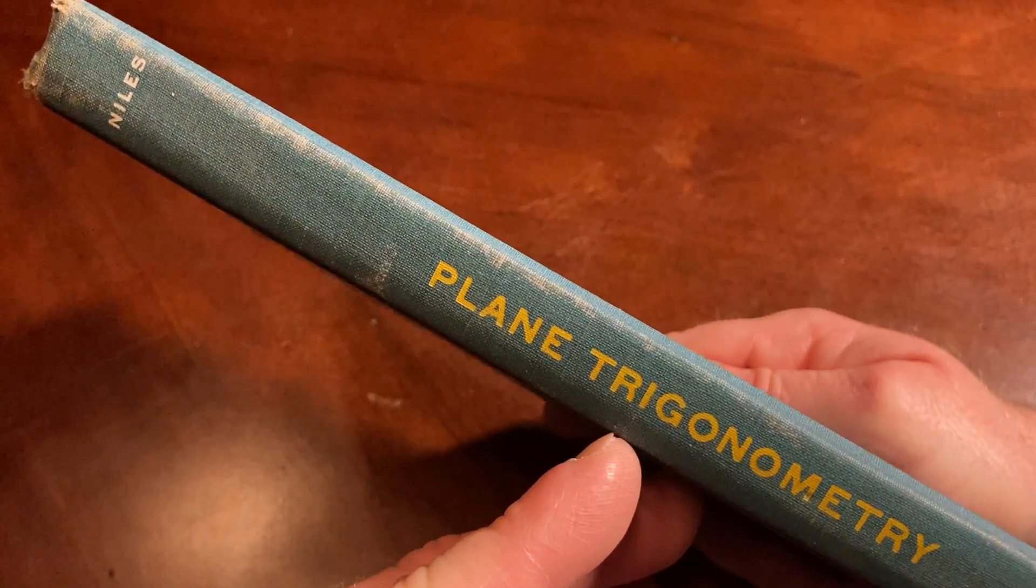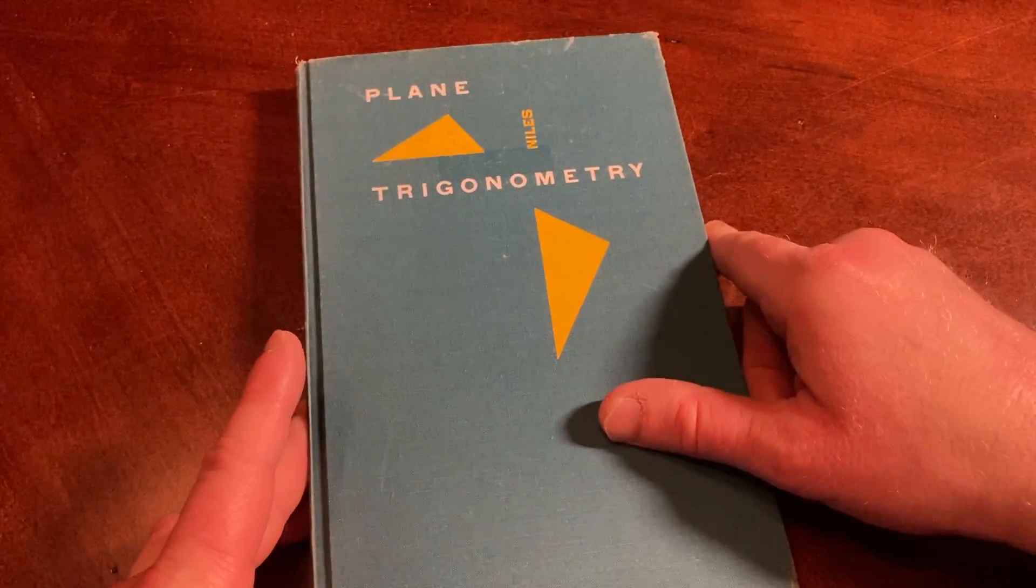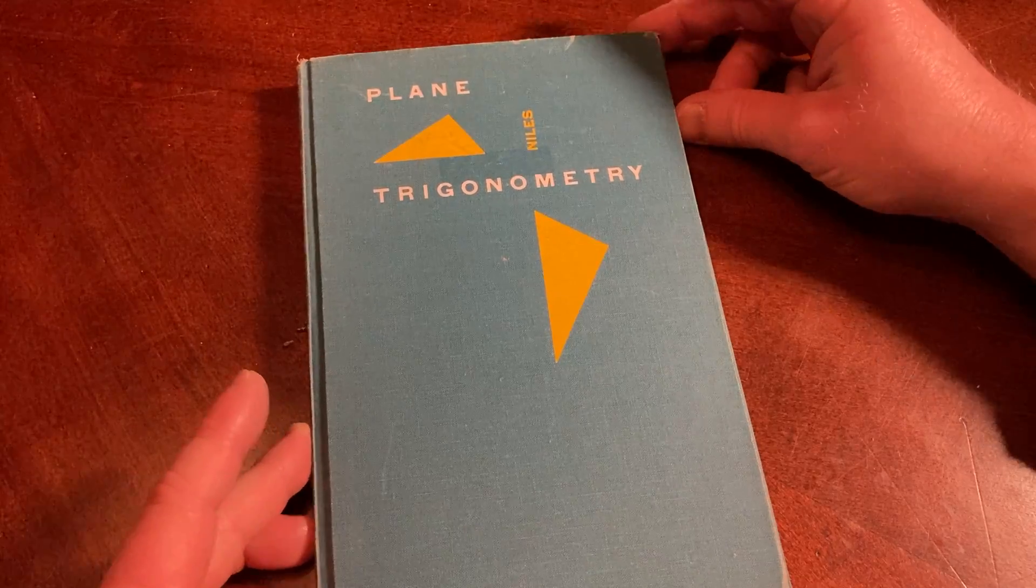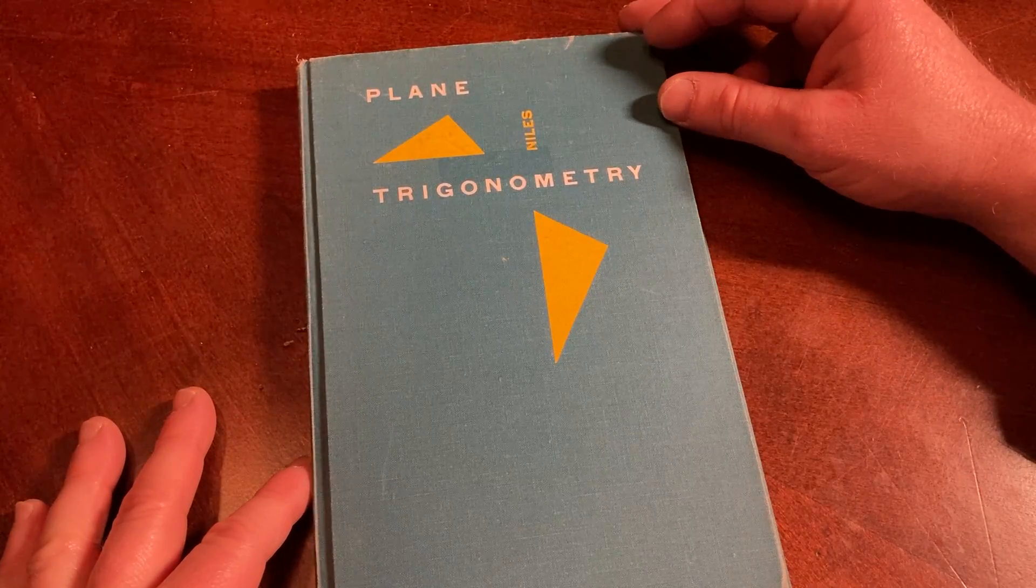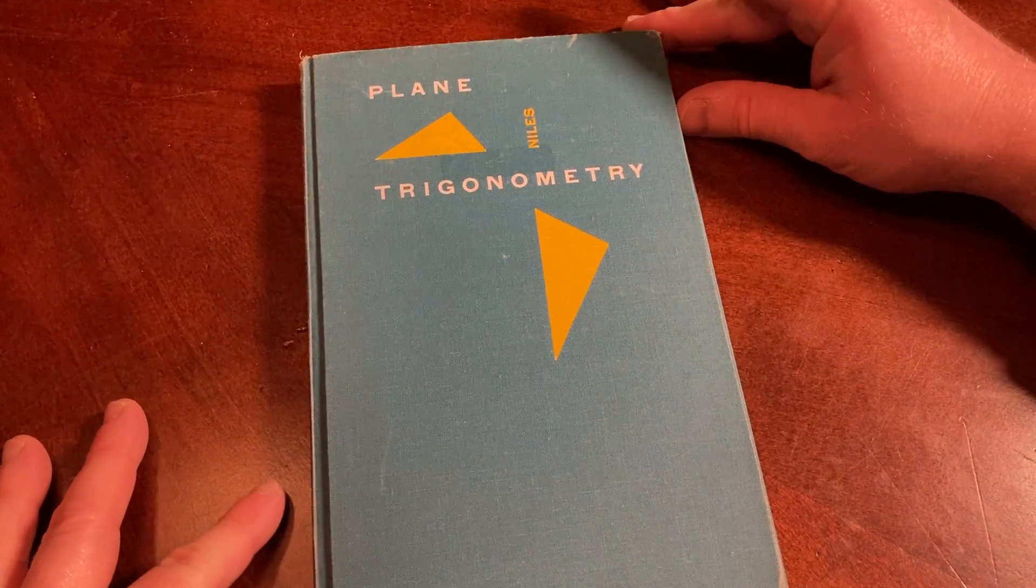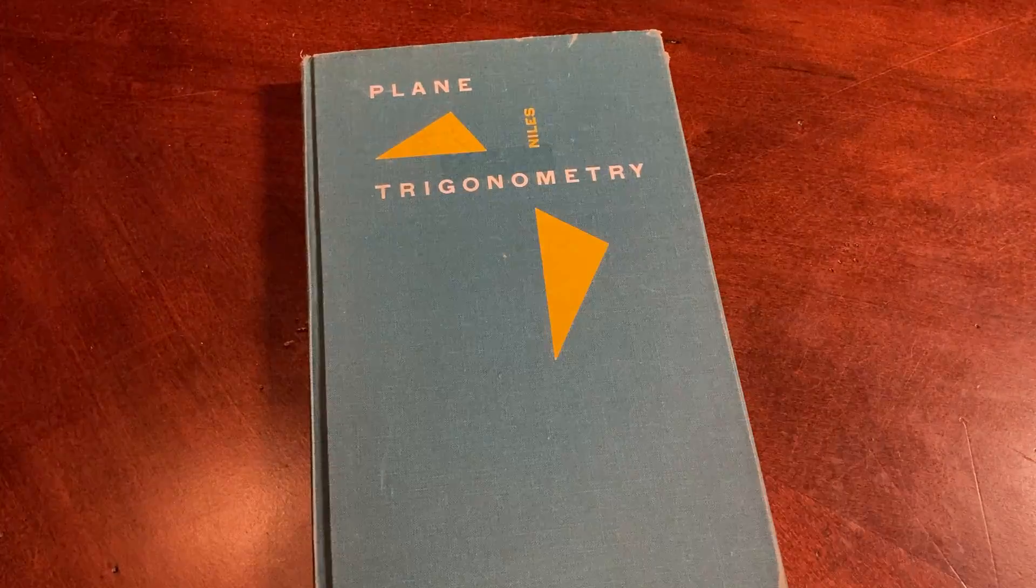Anyway, it's kind of an interesting book. I don't know if it's still in print. I will leave a link in the description to what I can find. It's called Plane Trigonometry and it's by Niles. It's a pretty interesting book. Good luck.